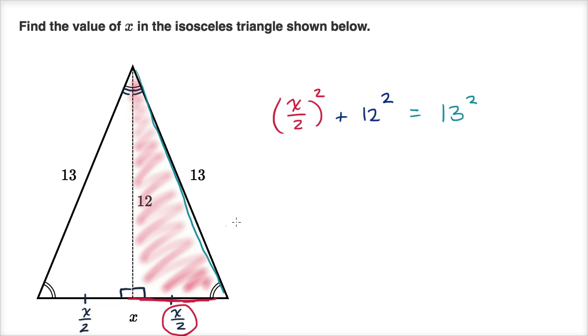This is just the Pythagorean theorem now. And so we can simplify. This is going to be x squared over four,